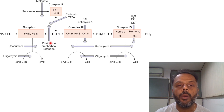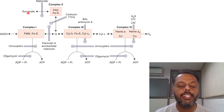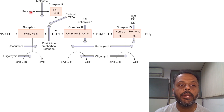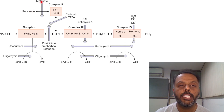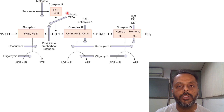Inhibitors of complex 2 are carboxin and TTFA, and malonate, which inhibits succinate dehydrogenase by competitive inhibition. These three are examples of inhibitors of complex 2.